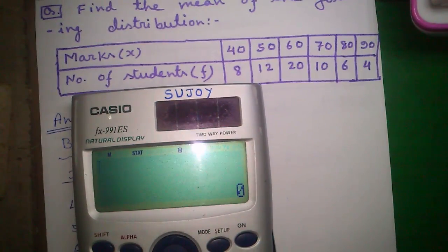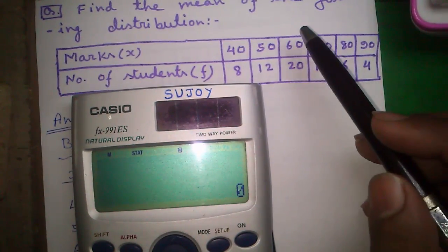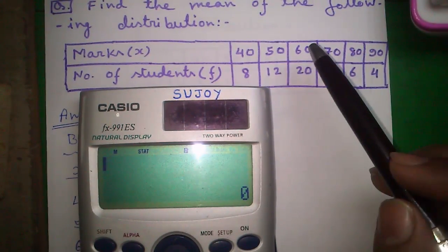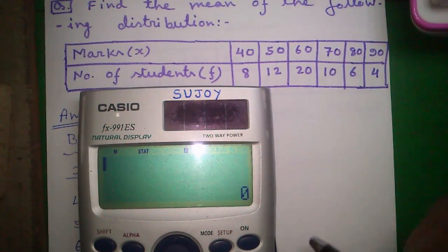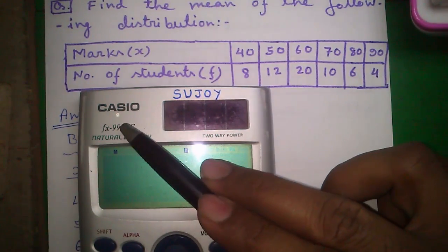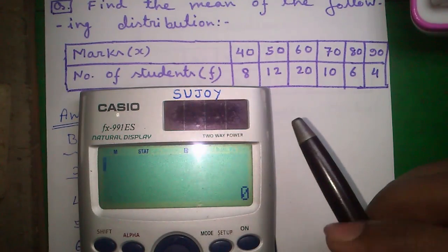Hi friends, I am Sujoy and today I will tell you how to find out mean of an ordered distribution having frequency using both techniques. First using normal method and second using a shortcut method using your Casio FX-911ES calculator. So let's start.